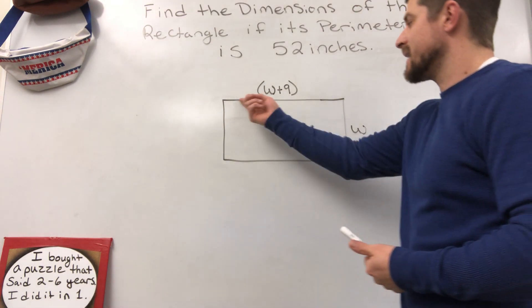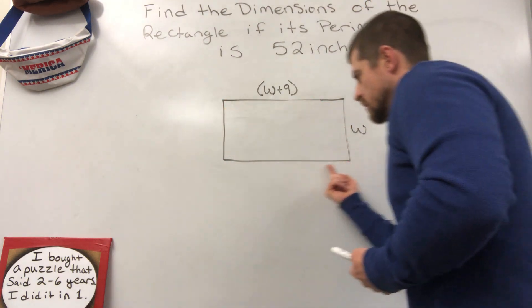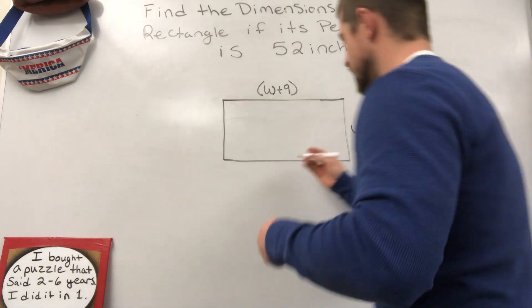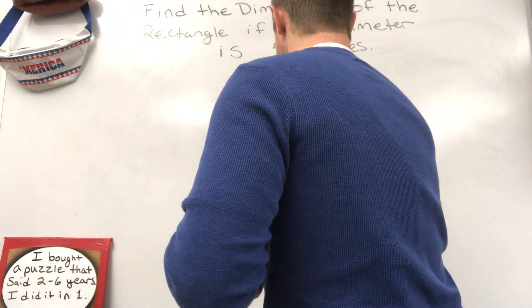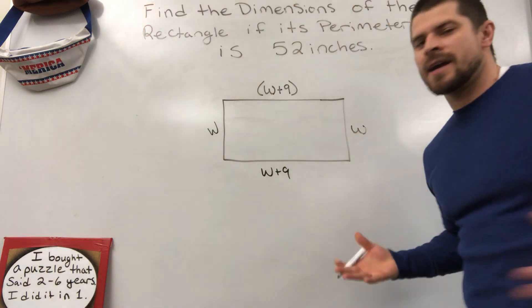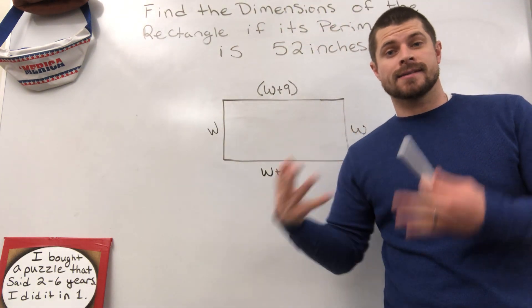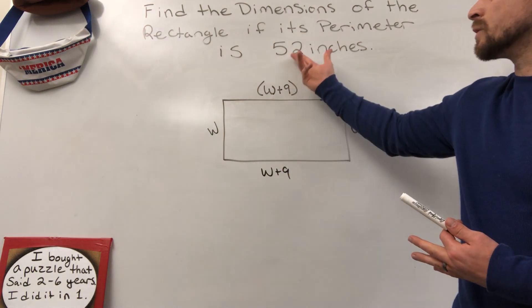We know that it is adding everything on the outside. So, W plus 9 plus W. That's got to be W plus 9. And that's a W. So now that we have everything out there, we can just add all of that up, combine it, get the sum, and say that it has to equal 52 inches.